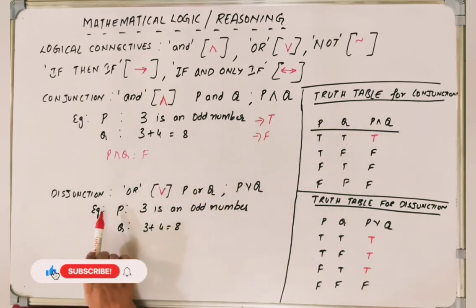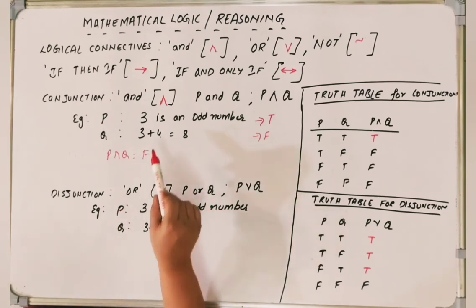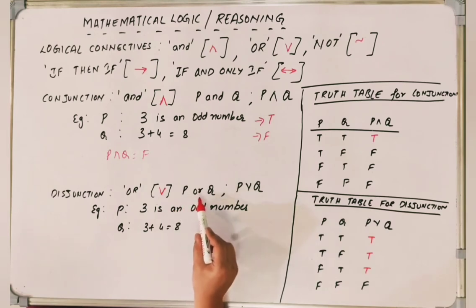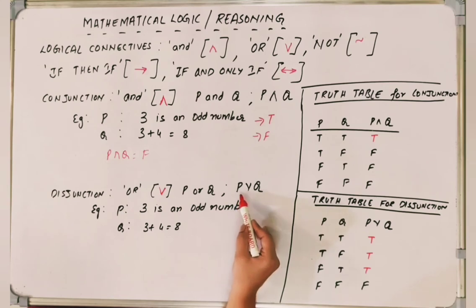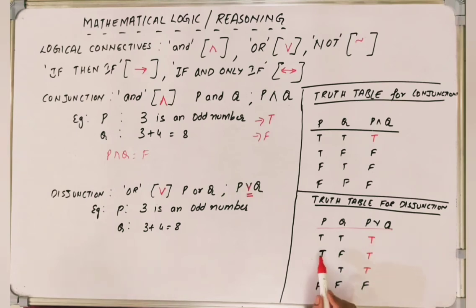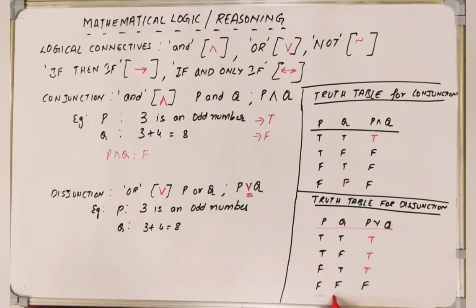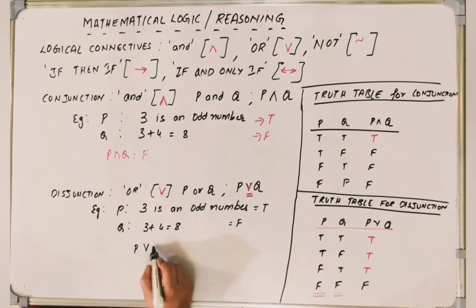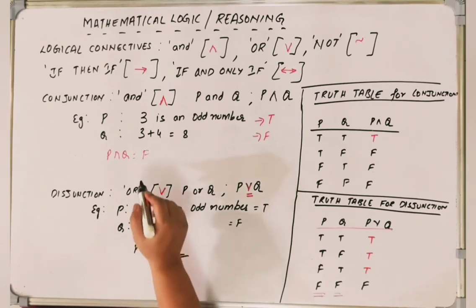Now let's take disjunction — the OR connector. Using the same two statements, P disjunct Q: even if one of the statements is true, the output is true. P is true, Q is true, so P disjunct Q is true. It is false only when both statements are false. With '3 is an odd number' (true) and '3 + 4 = 8' (false), P disjunct Q is true. Whereas in conjunction, it is false.